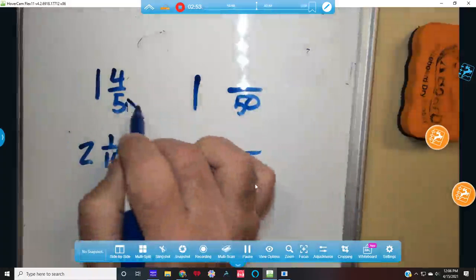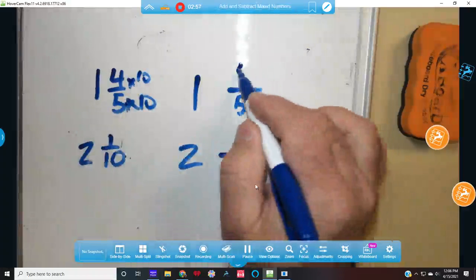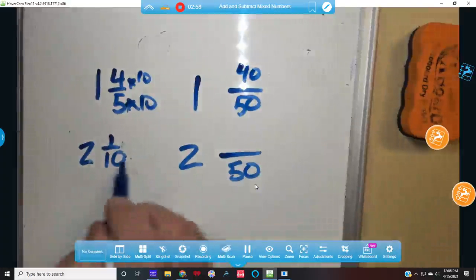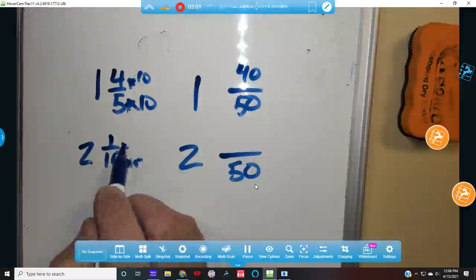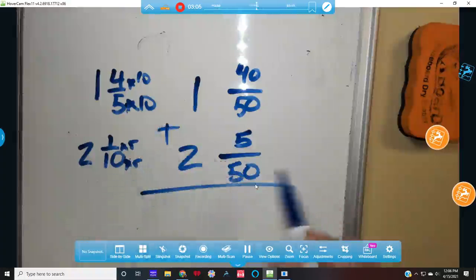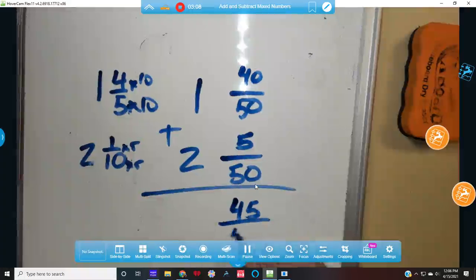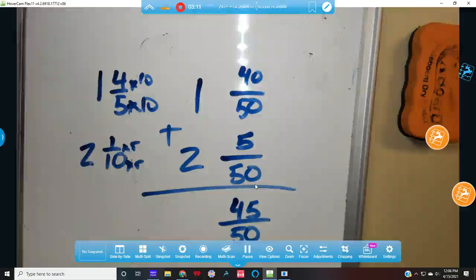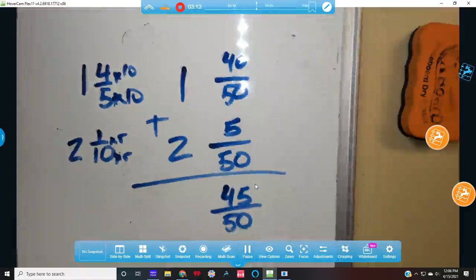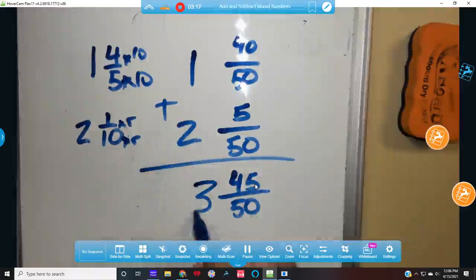Well, I had to multiply 5 by 10, so I had to multiply the top by 10. So I get 40 fiftieths. And here I had to multiply by 5. So I get 5. So now if I do my addition, 40 plus 5 equals 45 fiftieths. And then I add my whole numbers up here. 1 plus 2 is 3. 3 and 45 fiftieths.